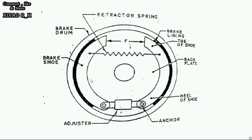The brake shoe moves outward, and the brake lining comes in contact with the brake drum, starting to reduce its speed. So when the brake drum speed is reduced, vehicle speed is reduced. Braking action takes place between the brake lining and brake drum, and due to friction, the brake drum speed is reduced.